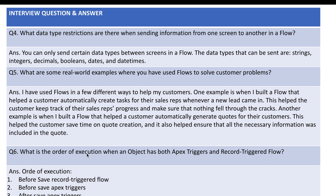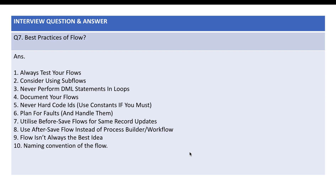What is the order of execution when an object has both an Apex trigger and a Record Trigger Flow? This is being asked by many interviewers nowadays. The order is: first, the before-save Record Trigger Flow runs; second, the before-save Apex Trigger; third, the after-save Apex Trigger; and fourth, the after-save Record Trigger Flow. So first and fourth are covered by the flow, and second and third are handled by the Apex trigger.